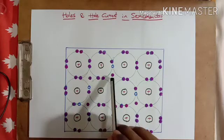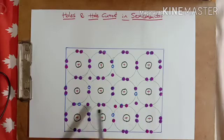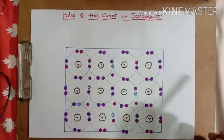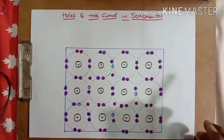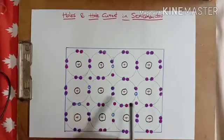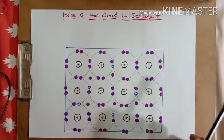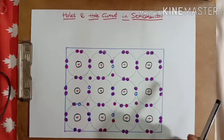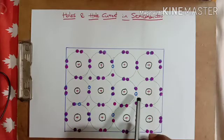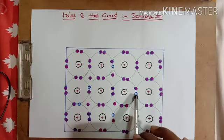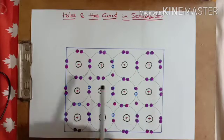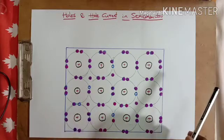When an electron breaks its bond and goes to the conduction band, it leaves behind a vacancy — that's called a hole. So if five bonds are broken, there are five free electrons and five vacancies. These vacancies are called holes. Holes are not real particles but are treated as hypothetical positively charged particles at a lower energy level in the valence band.